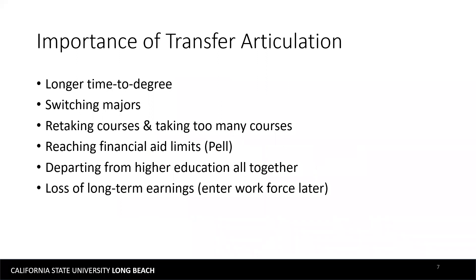So what is the importance of transfer articulation? There are many implications. The lack of or absence of transfer articulation could lead to longer time to degree for students, increases in major switching, students retaking courses and taking too many courses. As a result of longer time to degree, students may reach their financial aid limits — in particular Pell — departing from higher education altogether, and a loss of long-term earnings from entering the workforce later.